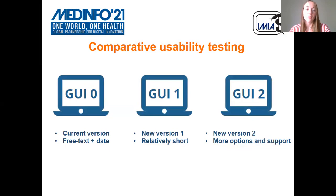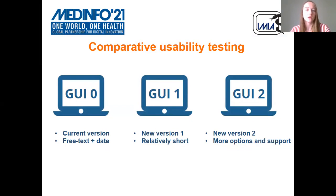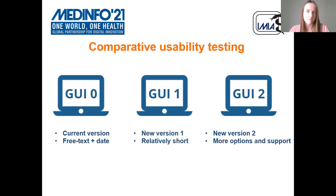We did a comparative usability testing study comparing three graphical user interfaces or GUIs. GUI 0 is the current version of the allergy documentation module in our electronic health record, called PREMIUS — unstructured and in free text, though end users can select a start date for the allergy. GUI 1 is the first new version: coded, structured, and deliberately short, but still asking the five essential data elements — allergen, reaction, timing of onset, timing of initial reaction, and diagnosis. GUI 2, the second new version, asks the same five data elements but offers more options so the user can more specifically characterize the allergy, and provides more support in the form of search filter functions and help text.